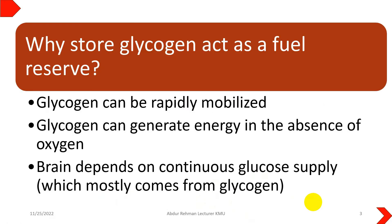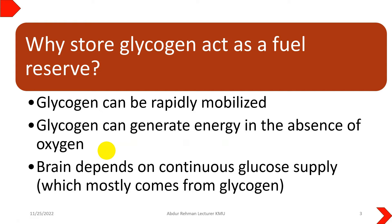So why store glycogen? It acts as a fuel reserve. First, glycogen can rapidly provide glucose production and can be easily mobilized when in reserve form. Second, glycogen can generate energy in the absence of oxygen, so even in hypoxic conditions it can be utilized. Third, the brain depends on a continuous glucose supply, and the glycogen reserves in the liver constantly provide glucose to brain cells.